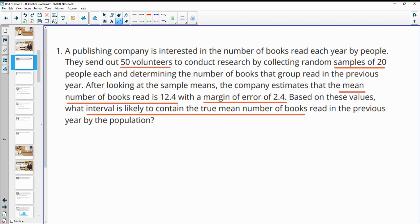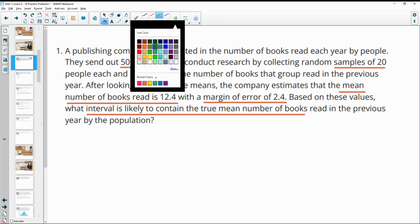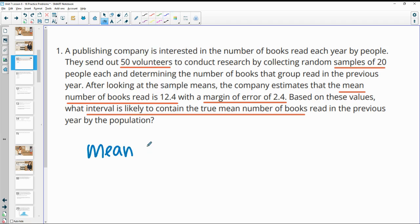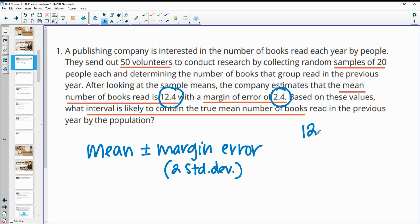So what interval is likely to contain that true mean? So you learned in this lesson that you would take the mean plus or minus the margin of error. And the margin of error is defined by two standard deviations. And then we would just add or subtract this to the mean. So they just gave us the margin of error and they gave us the mean. So we're just going to do 12.4 plus 2.4. That's going to give us our upper limit of 14.8. And then we're going to do 12.4 minus 2.4. And that will give us our lower boundary of 10. So we would expect the true mean to be between 10 and 14.8.